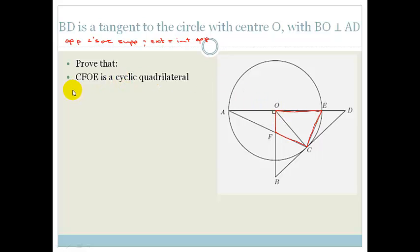In CFOE, we have that angle FOE equals 90 degrees. Why? Because it's given. But if you look carefully, you can see that AEC is a triangle. And since AE is the diameter because it goes through the centre of the circle, that means that this is 90 degrees. Why? Because it's angle in a semicircle. Therefore, we've got ACE is equal to 90 degrees. Why? Angle in a semicircle.